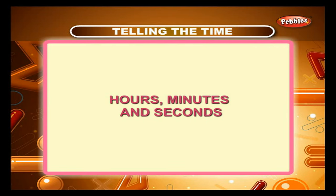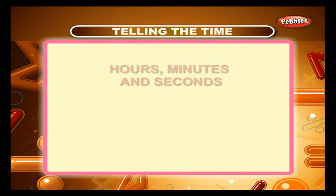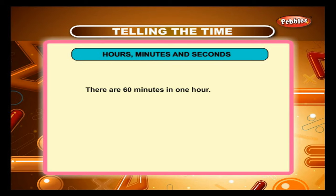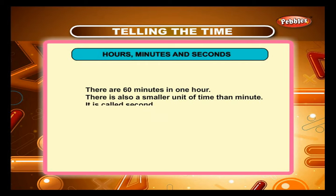Hours, minutes, and seconds. There are 60 minutes in 1 hour. There is also a smaller unit of time than a minute — it is called a second. There are 60 seconds in 1 minute.